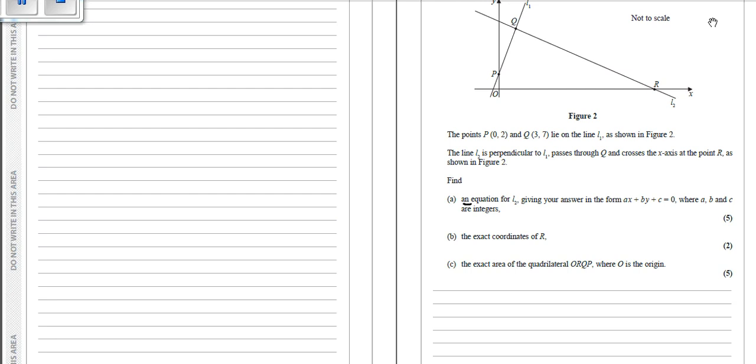So the first thing, it says an equation for L2. Whenever you're asked to find an equation, the first thing you write down is y minus y1 equals m(x minus x1). And you need two pieces of information. You need to have a coordinate which lies on the line, and you need to have the gradient. So if we've got L2, we know that q lies on L2. So we've got the coordinate which is 3, 7.